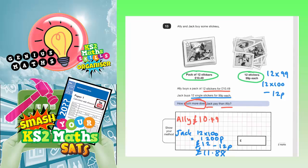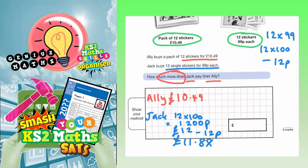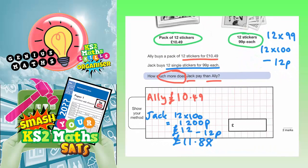So Jack must have paid £11.88. Let's just zoom in there. Jack has paid £11.88, but Ali's paid £10.49.